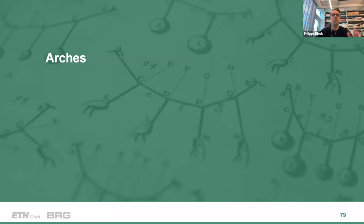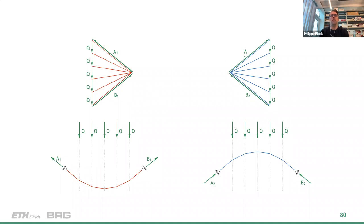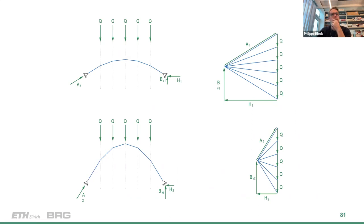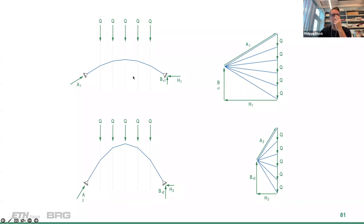Now let's go to arches. If you understand cables, you simply flip the loads and flip the structure to the other side. The equilibrium shape of a cable in pure tension is the shape of an arch in pure compression. The same ideas apply: in the force diagram, if you have a very shallow structure, the horizontal forces are larger. The shape is found by choosing a pole and drawing elements parallel to the corresponding form diagram elements — or conversely, the force diagram explains the equilibrium of the forces in the arch.